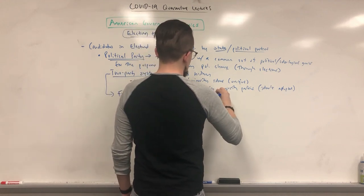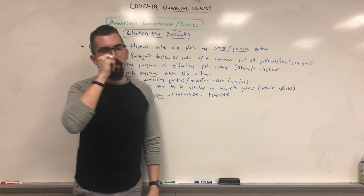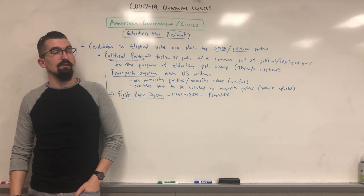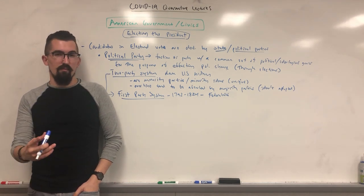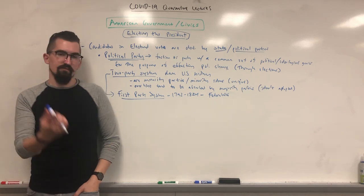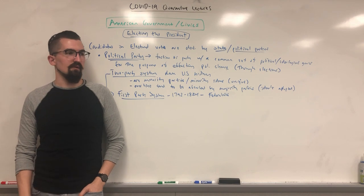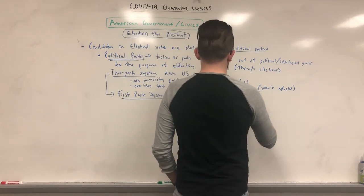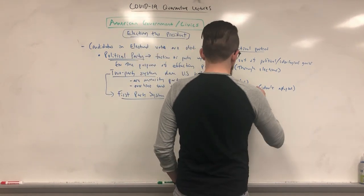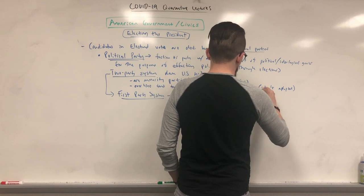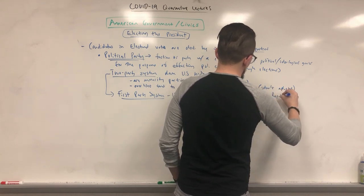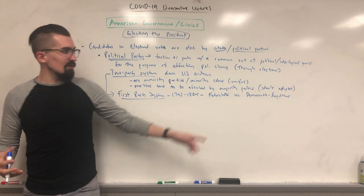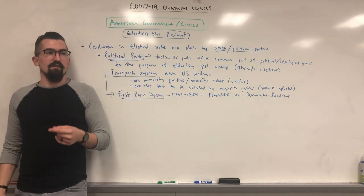In the first party system, the two major parties were the Federalists — who were generally pro-Britain, pro-commerce, in support of a central banking system, and in favor of a strong national government — and the Democratic-Republicans, led by Thomas Jefferson and later Madison. The Democratic-Republicans were much more in favor of smaller-scale government, and many Anti-Federalists were aligned with them.